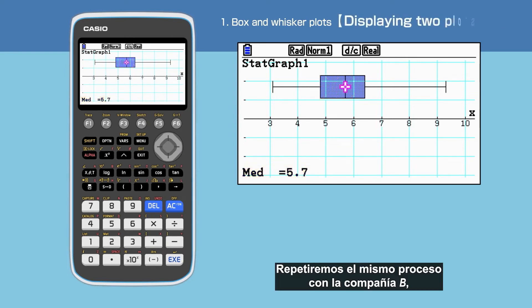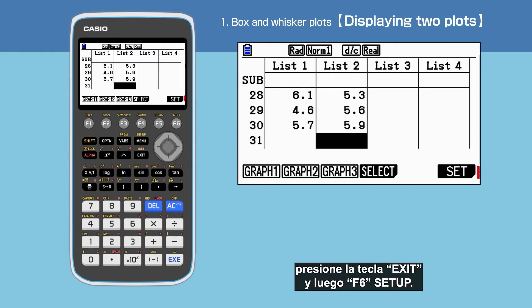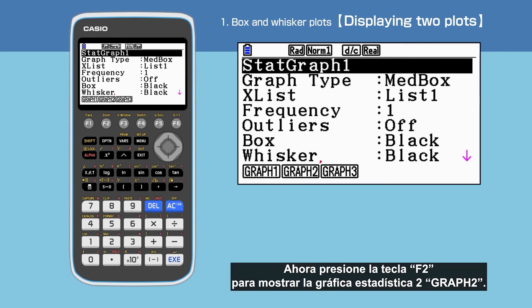We will repeat the same process with Company B. Press Exit then F6 to set up. Choose F2 to display Stat Graph 2.